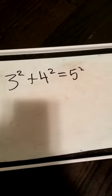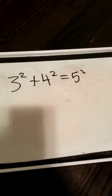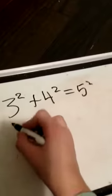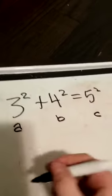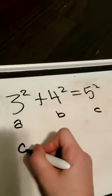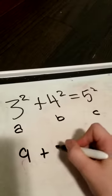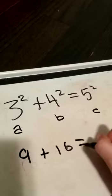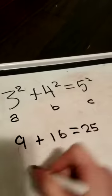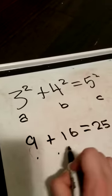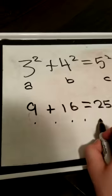So remember how in that example it said 3 squared plus 4 squared equals 5 squared, right? Well, this is a, b, and c. So how do we do this? What is 3 squared? That's 9. 4 squared? That's 16. And 5 squared is 25, right? So 9 plus 16 equals 25.